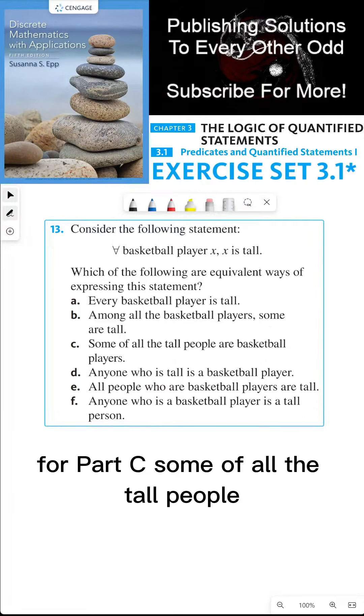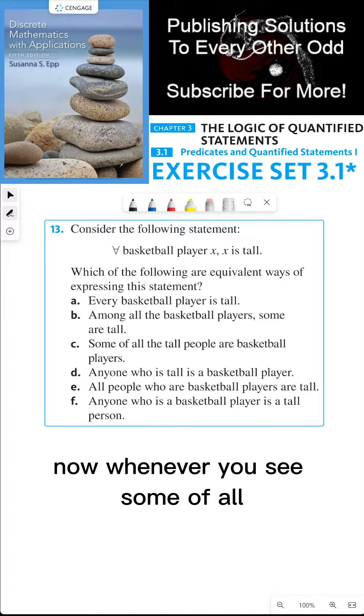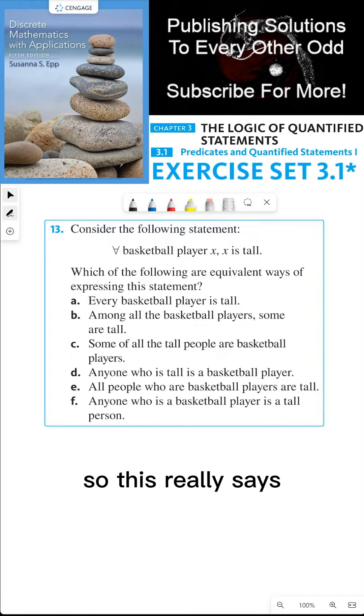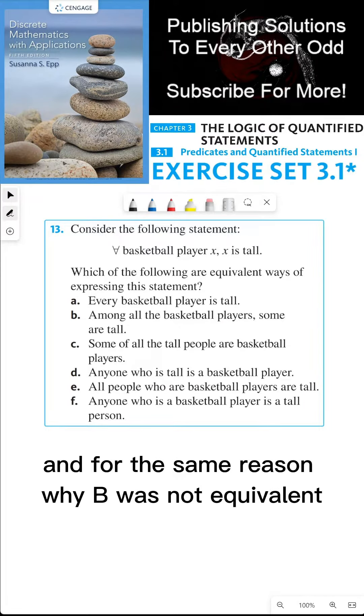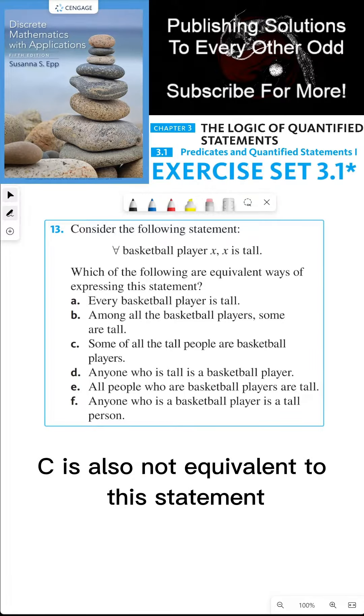For part c, some of all the tall people are basketball players. Now whenever you see some of all, that just means some. So this really says some of the tall people are basketball players. And for the same reason why b was not equivalent, c is also not equivalent to this statement.